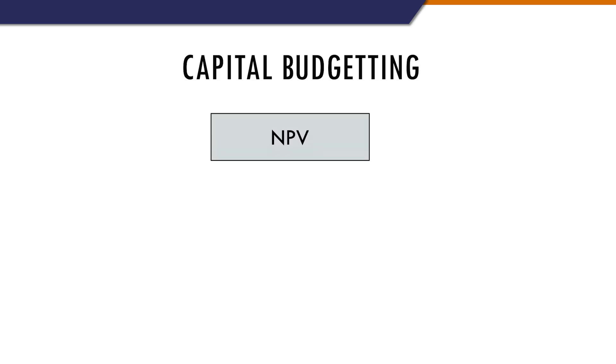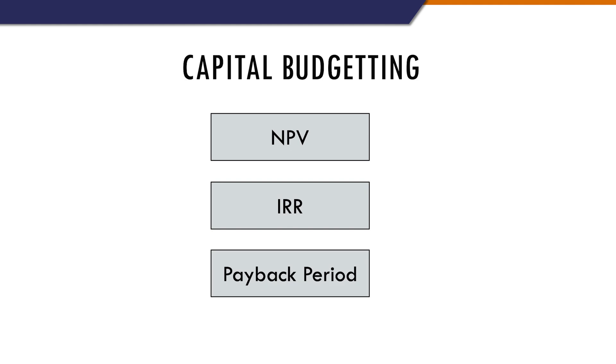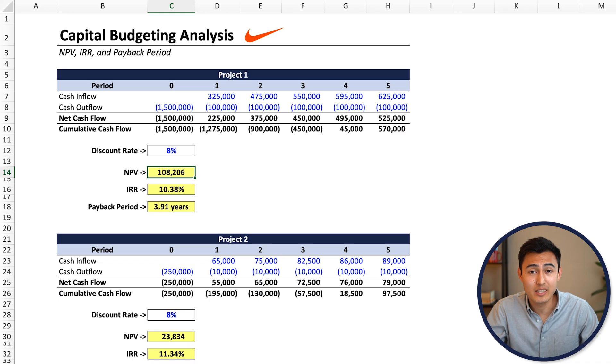In this video, we'll go over the main capital budgeting techniques, which are the NPV, the IRR, and the payback period. Alongside learning the theory, we'll practice using relevant examples on Excel.